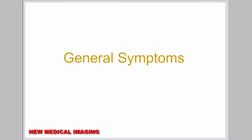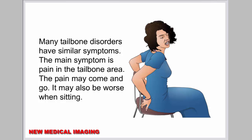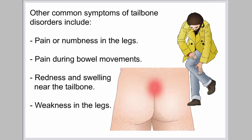Many tailbone disorders have similar symptoms. The main symptom is pain in the tailbone area. The pain may come and go, and it may also be worse when sitting. Other common symptoms of tailbone disorders include pain or numbness in the legs, pain during bowel movements, redness and swelling near the tailbone, and weakness in the legs.